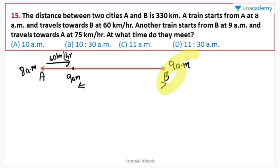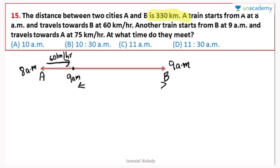Let's solve this question. Train A starts at 8 am and train B starts at 9 am. In the 1 hour head start, train A traveling at 60 km per hour covers 60 km. So the remaining distance between the two trains when train B starts is 330 minus 60, which is 270 km.